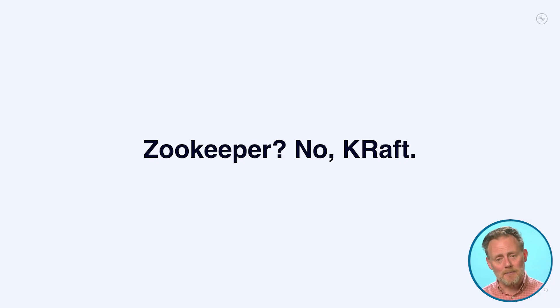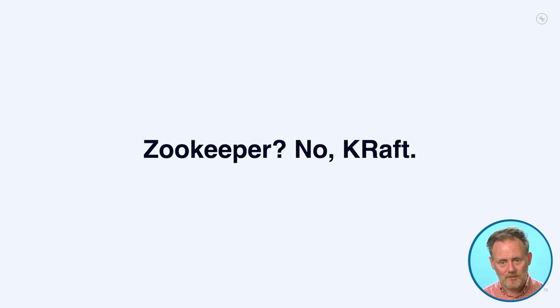If you've seen a previous version of this course or read older docs, you may have heard about Apache Zookeeper, which sat alongside the brokers and helped maintain a consistent view of metadata. You don't need that anymore. As of Apache Kafka 4.0, Kafka no longer includes or has the option of using Zookeeper. That consistent metadata functionality is now provided by the brokers themselves using their own implementation of the Raft protocol, called KRaft. As of 4.0, the brokers store and provide a consistent view of metadata using KRaft — you don't need to worry about Zookeeper anymore.